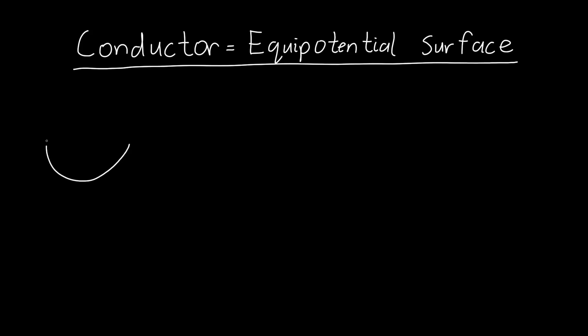So in this video, we're going to learn why conductors, or why the surface of a conductor is always an equipotential surface, or the voltage, the electric potential, is equal to a constant.